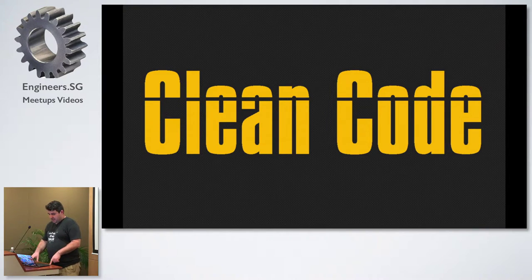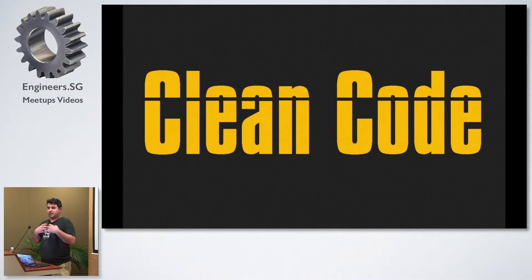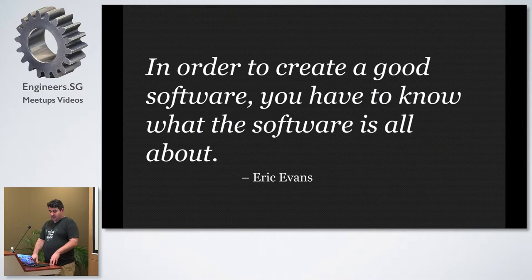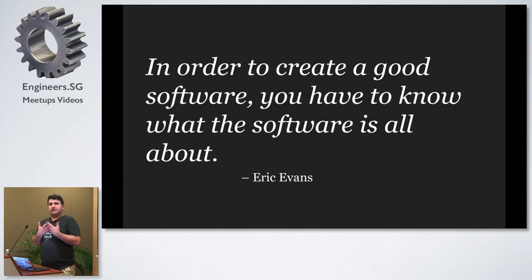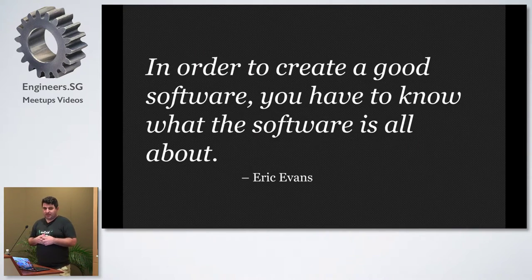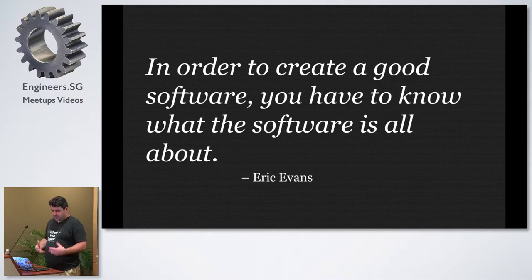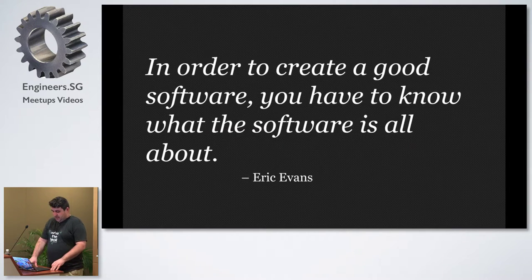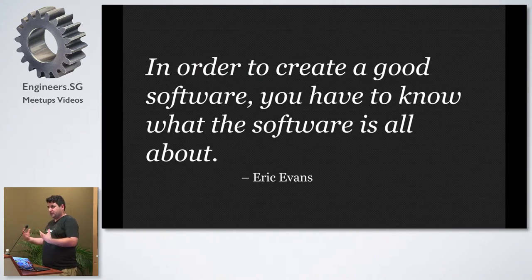Before I explain what we've done, let me talk a bit about clean code. This is something we love at my company — we pride ourselves in being software engineers who write beautiful code we can be proud of. At what point can we decide that code is beautiful? Eric Evans, the guy who wrote the brilliant book about domain-driven design, said that in order to create good software, you have to know what the software is all about. Basically, to write good software, you have to learn what the business you're building for is all about.